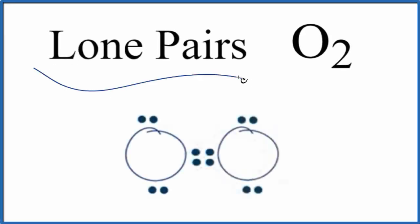Let's take a look at the number of lone pairs for O2. This is diatomic oxygen, sometimes called oxygen gas. It's the O2, it's the oxygen we find in the atmosphere.